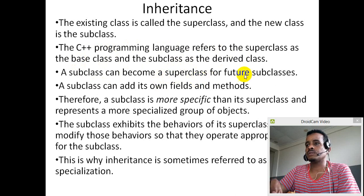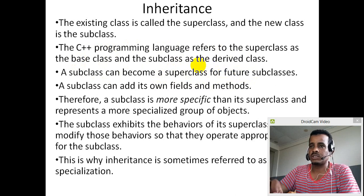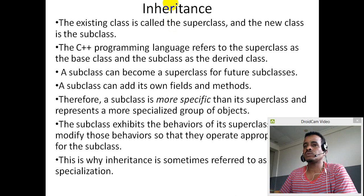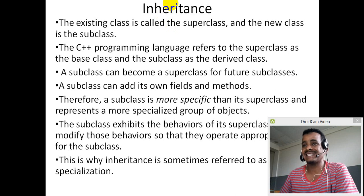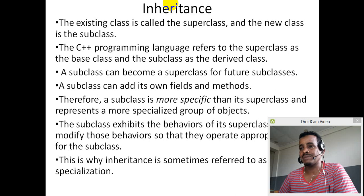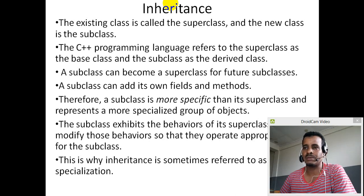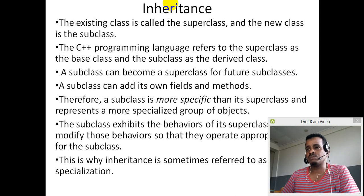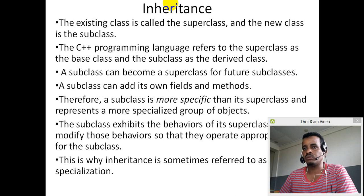A sub class can also become a super class for future sub classes. The super class has fields and methods that are the same. The methods include static and instance variables. The methods can also be overridden in the sub class.